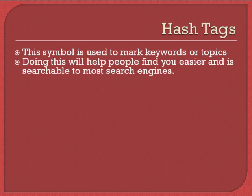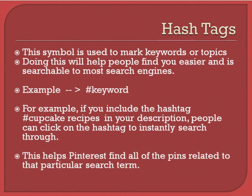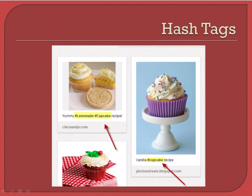Now let's talk about hashtags and how to use them correctly. This symbol is used to mark keywords or topics, and doing this will help people find you easier and makes your content more searchable to most search engines. The hashtag is just a number sign — you put a number sign and then the keyword. For example, if you include the hashtag #cupcakerecipes in your description, people can click on that hashtag and it will be highlighted as a link.